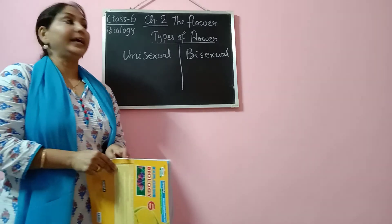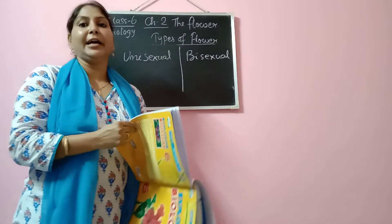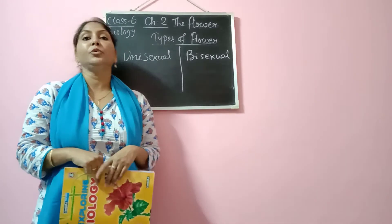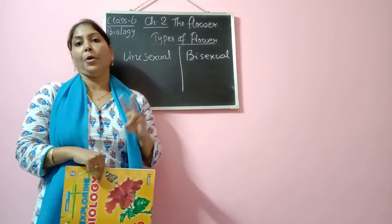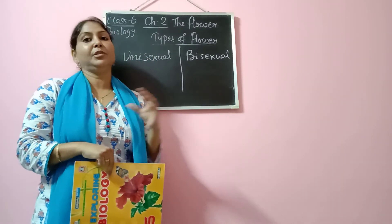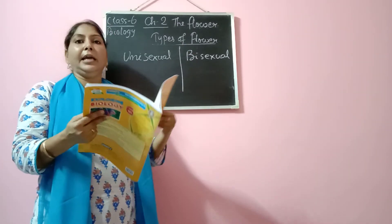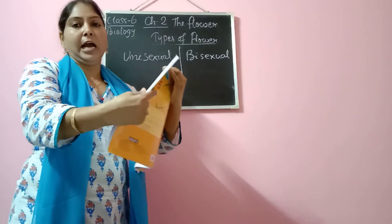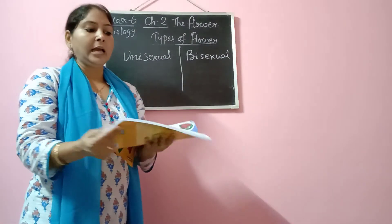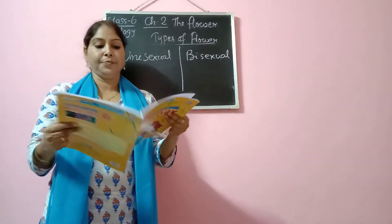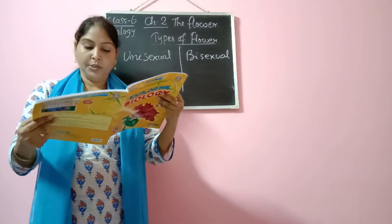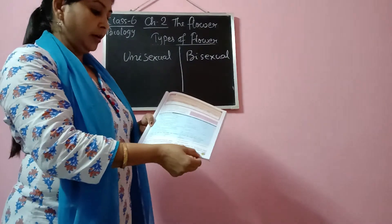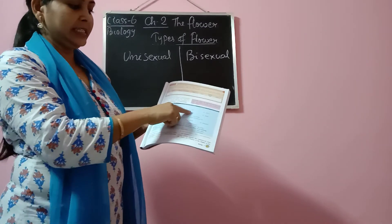Till then, your work is to write the difference between the two types of flowers we have studied — complete and incomplete flower, and unisexual and bisexual flower — at least two points for each type. Also, as I told you in the last class, you have to draw all the diagrams. Do read the topic as well. You will find exercises on page number 27, and we will discuss those exercises.